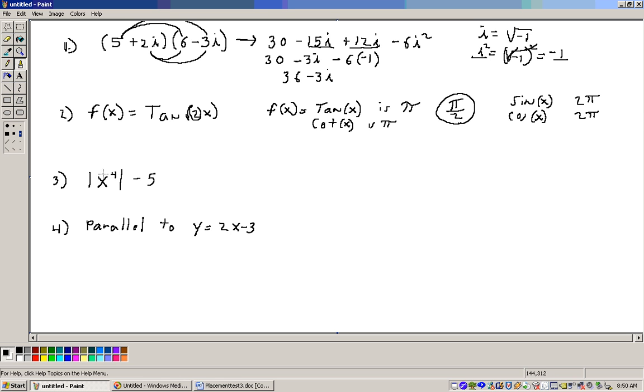Okay, the next one says the expression, the absolute value of x to the 4th minus 5 is equivalent to what? And it gives you some choices. Well, if you take any number and you raise it to the 4th power, it already makes it positive. See, if x is negative or positive, when you raise it to the 4th power, you'll get a positive number. So actually the absolute values aren't needed on this expression. So actually this is the same as x to the 4th minus 5. And that's all they're looking for on that one. And that's answer C.